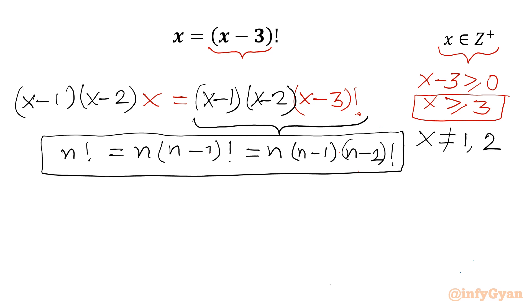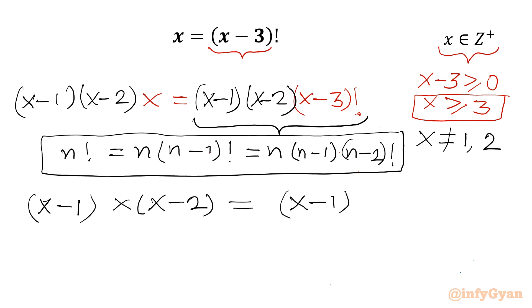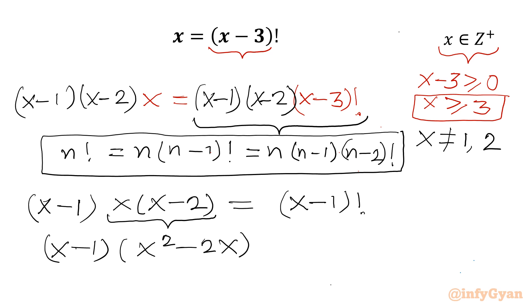On the left-hand side I will write (x-1) as it is, then it becomes x times (x-2). On the right-hand side, applying the recursive formula, we get (x-1)!. Then I will write the LHS as (x-1) times (x² - 2x), and the RHS remains (x-1)!.